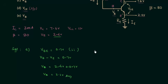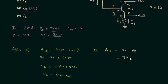Now solving Part D, we calculate the output voltage VCE. We know VC = 7.6 volts and VE = 2.4 volts. So VCE = VC minus VE = 7.6 minus 2.4 = 5.2 volts. This is the answer for Part D.